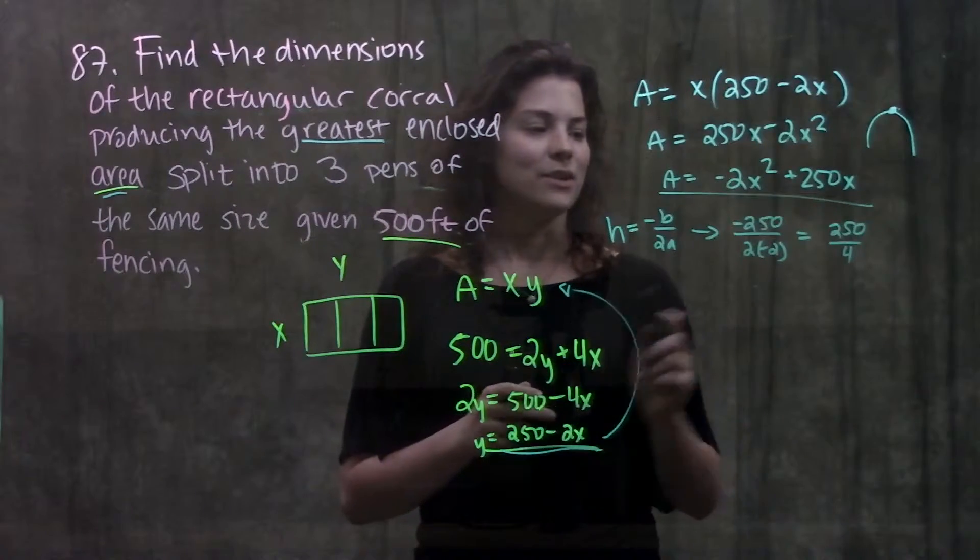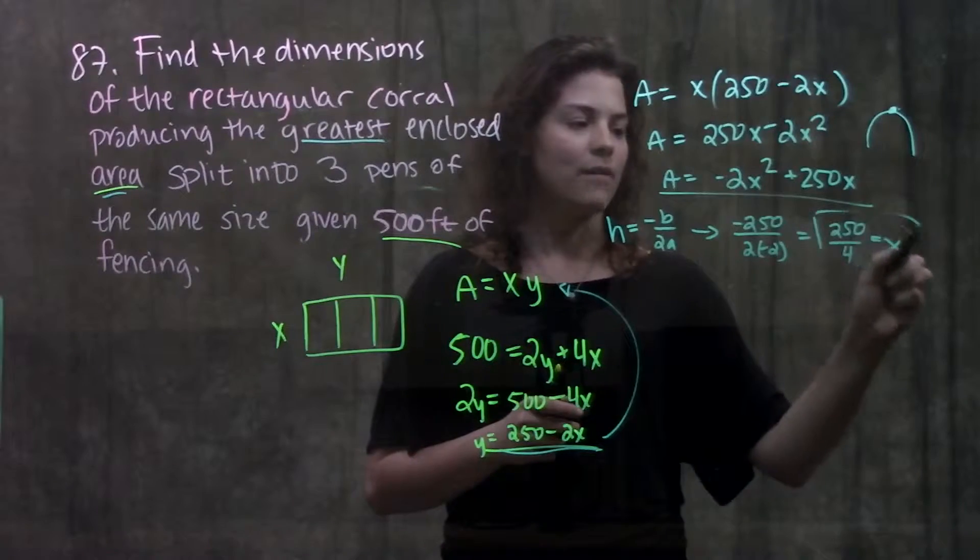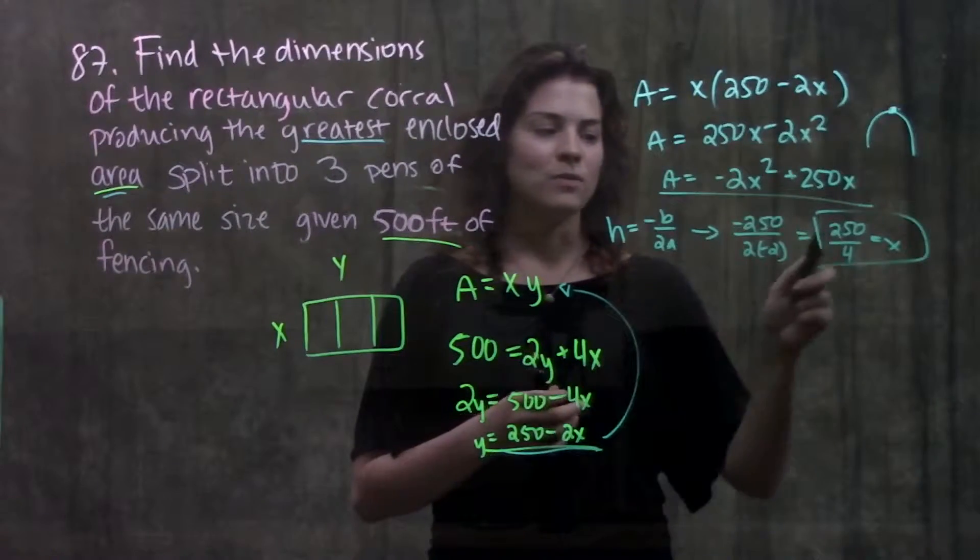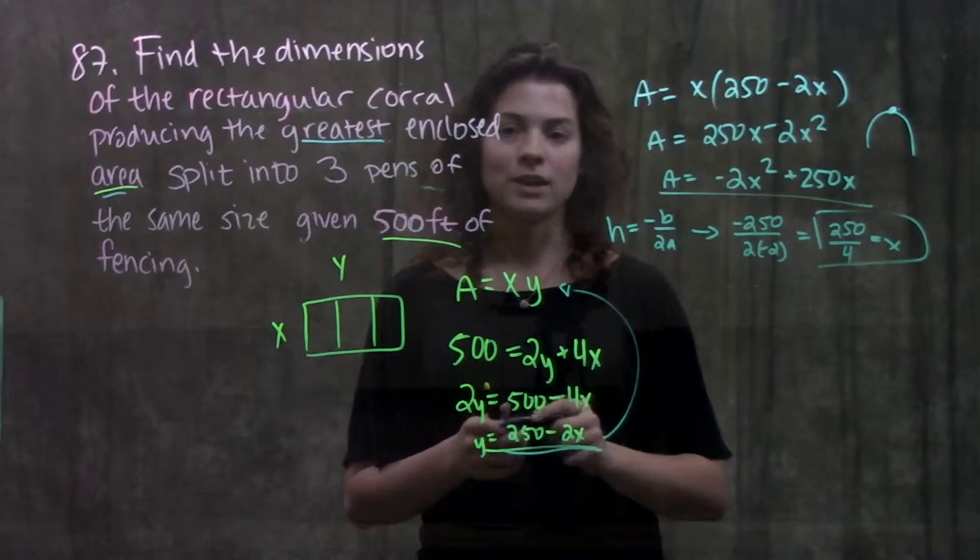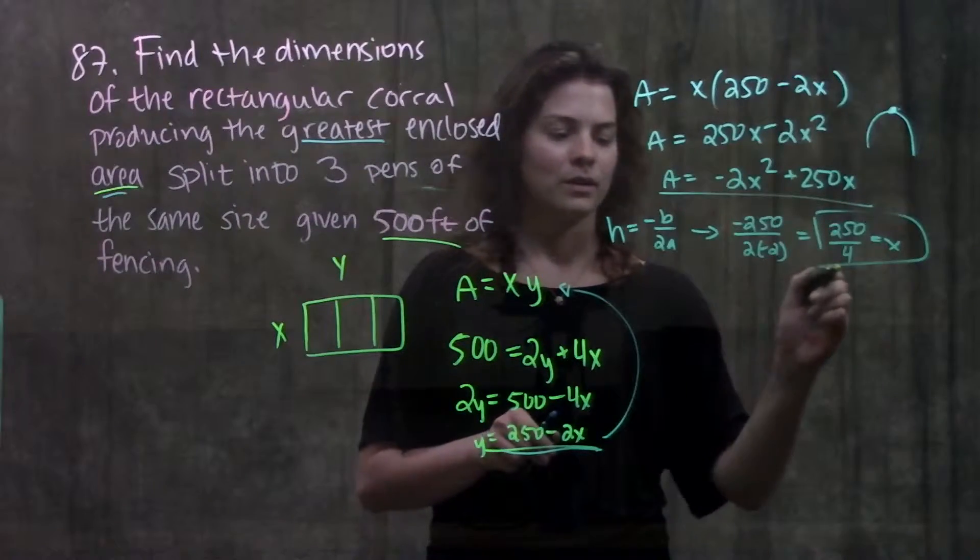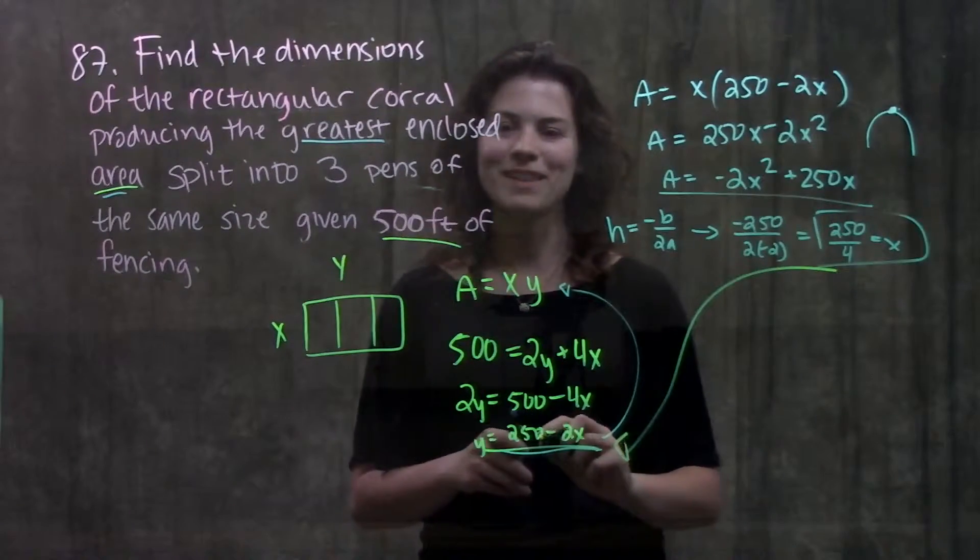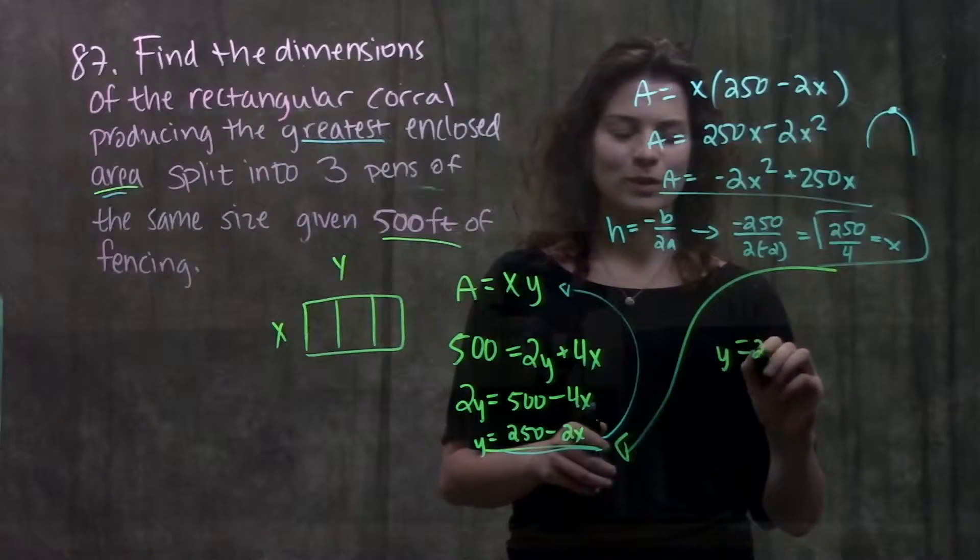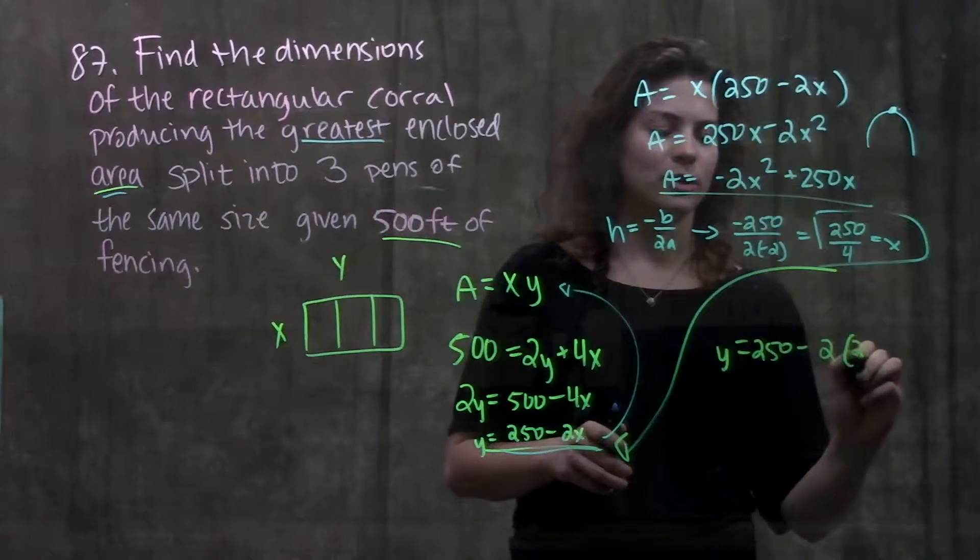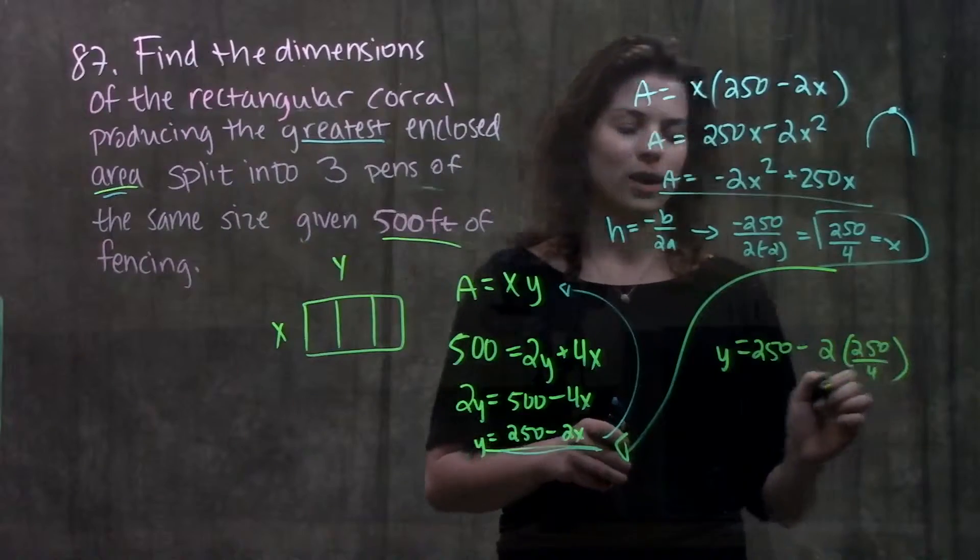Alright so here is the x value of our corral. To find our y value we can just take this, plug it into this function and solve for our y. So when we plug this in we'll get y is equal to 250 minus 2 times x or 2 times 250 over 4.